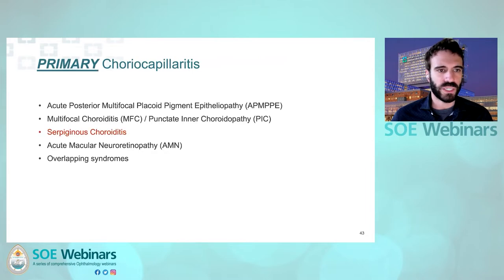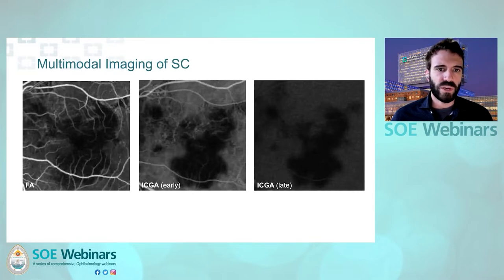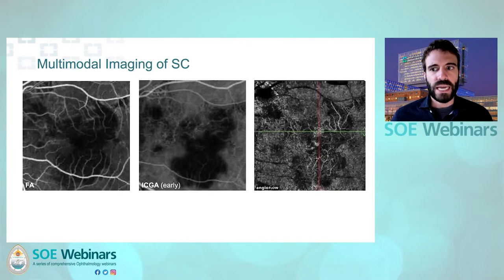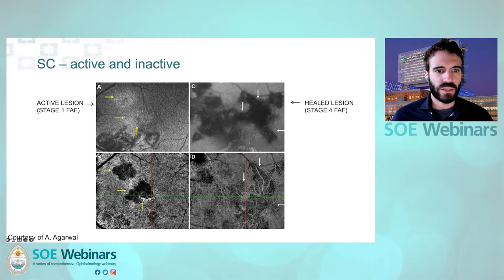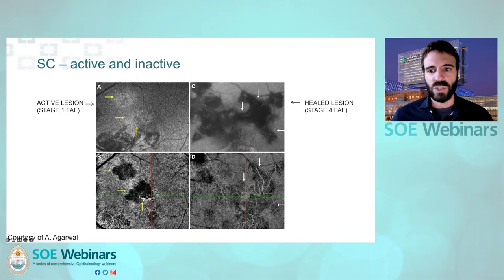Let's move on to serpiginous choroiditis. In serpiginous choroiditis, fluorescein angiography is not very useful because of blockage from the RPE. So ICG early and late is paramount, and it shows ischemia of the chorocapillaris, reflected very well on OCTA of the chorocapillaris. There are two particular appearances: one characterized by a complete flow void, and one where you can see the below choroidal vessels. Through OCTA we can distinguish different stages of serpiginous choroiditis lesions — when there is complete flow void, the lesion is active with active ischemia. Once the lesion heals and the chorocapillaris becomes atrophic, there is a transmission effect with a particular appearance on OCTA.